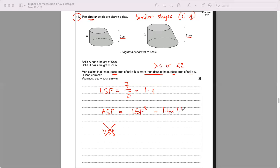And area scale factor will be that squared which is 1.4 times 1.4, and remember to do it on the side here it's a non-calculator paper, and you should get 1.96.